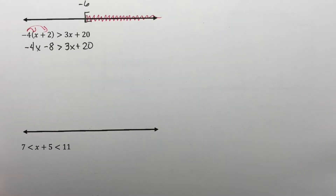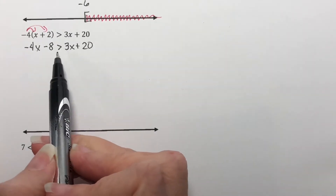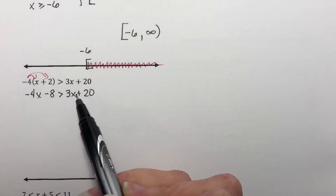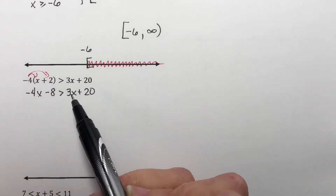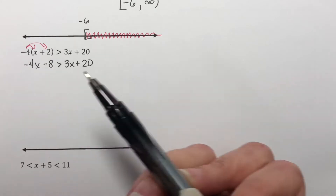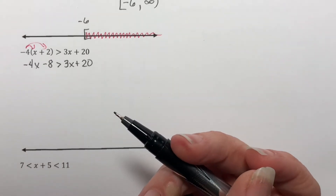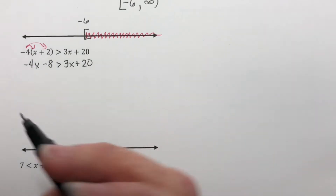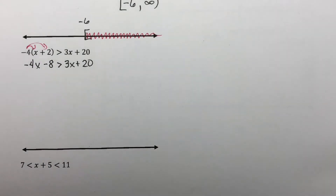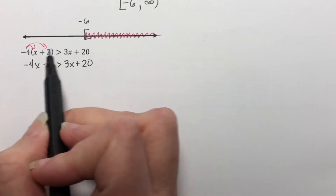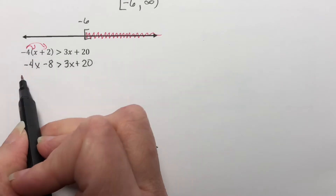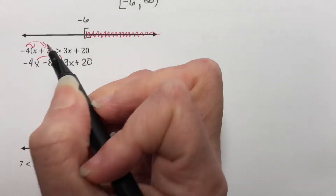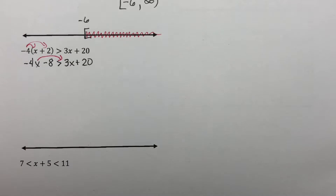I want to get my x's together. We're going to end up having to divide by something if we end up with a number in front of our x. And if we can avoid having the coefficient of x being a negative number, then we don't have to remember to flip our sign around. I have the option of moving the negative 4x to the right or the 3x over to the left. I'm going to move the 3x over here so that I can have a positive 7.